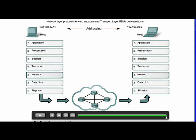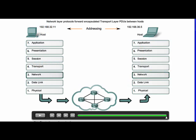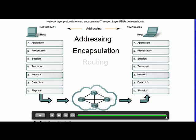The network layer, or OSI Layer 3, provides services for the exchange of data over the network between end devices. Layer 3 uses four basic processes: addressing, encapsulation, routing, and decapsulation.